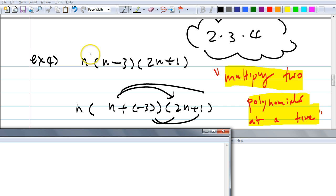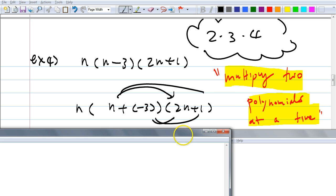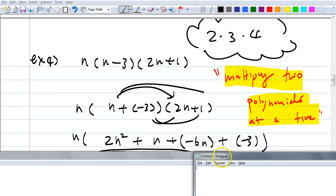So like I said, it doesn't matter whether you multiply n times n minus three and multiply the whole thing to two n plus one, right? But I like to multiply the last two because we just did a bunch of these binomials. Who could tell me what I get when I multiply n plus negative three times two n plus one? Gianni, what do I get there? You get two n squared plus n plus negative six n plus negative three. That's right.